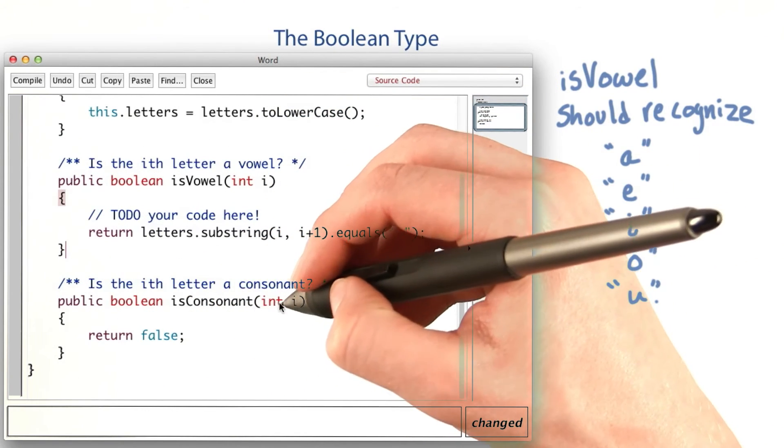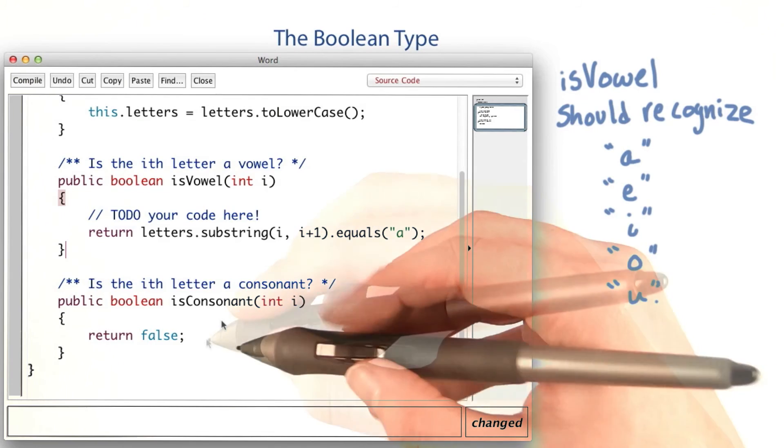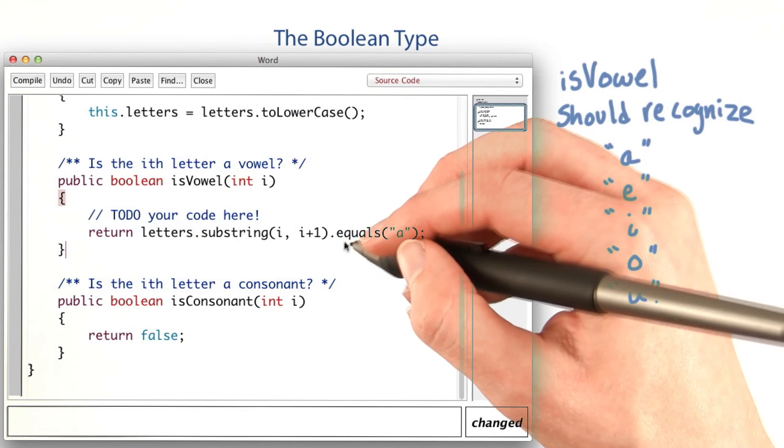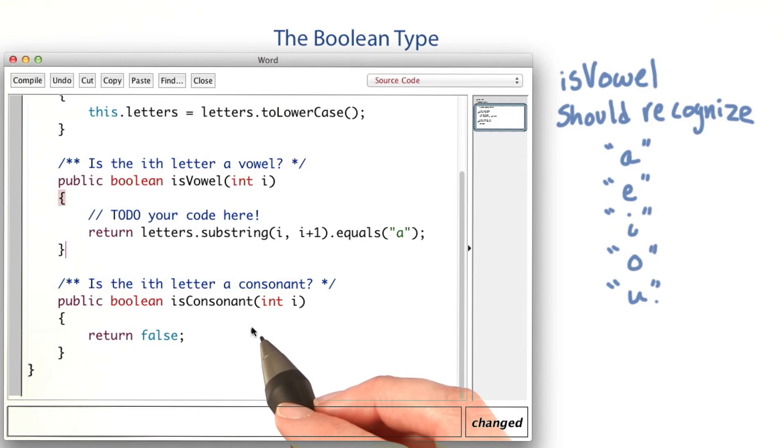The isConsonant method is completely empty at the moment. It's your turn. Fix the condition in isVowel and implement the isConsonant method. Here's a hint. You shouldn't need to do 21 checks to implement isConsonant.